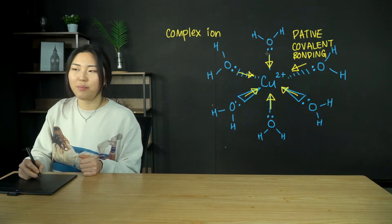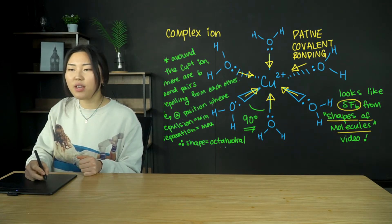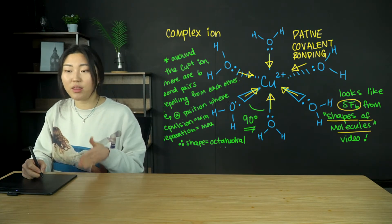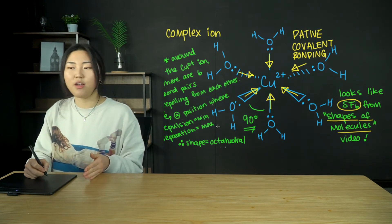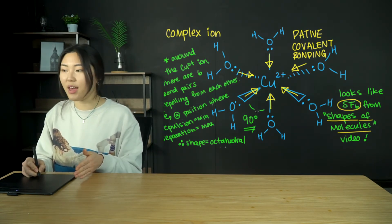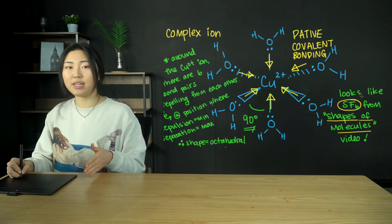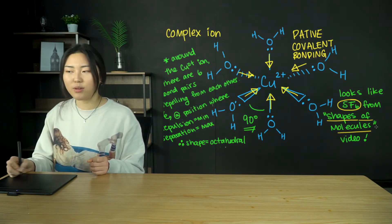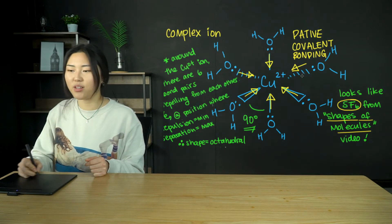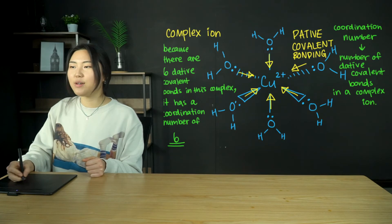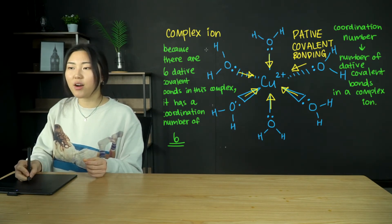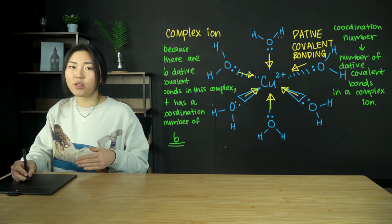Ligands bond by dative covalent bonding, so around the copper 2+ ion there are six bond pairs repelling each other. They adopt a position of minimum repulsion and maximum separation, resulting in an octahedral shape with bond angles of 90 degrees — similar to SF6 from the Shapes of Molecules topic (topic 3). The coordination number is the number of dative covalent bonds in a complex ion; with six dative bonds, the coordination number here is six.